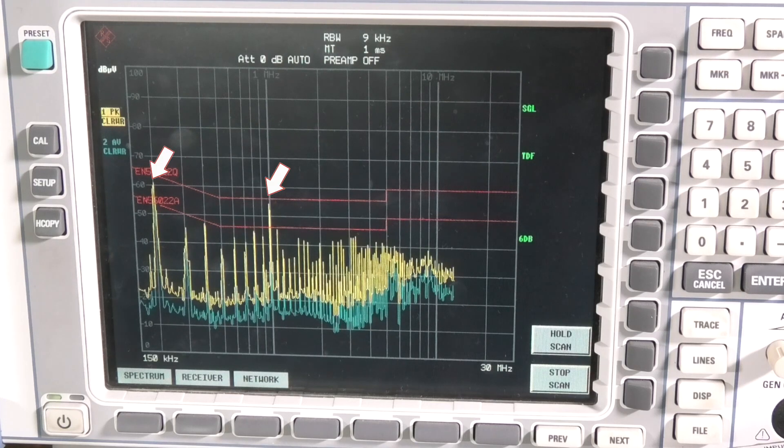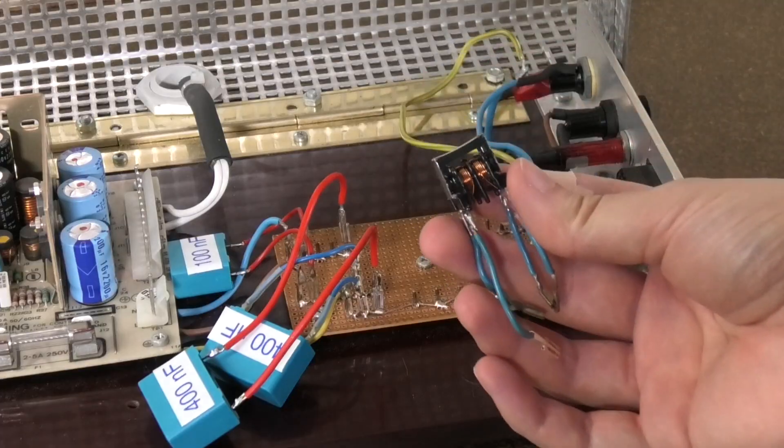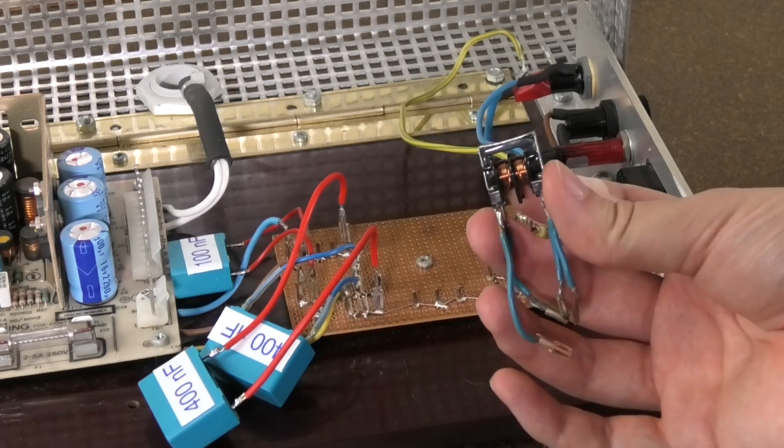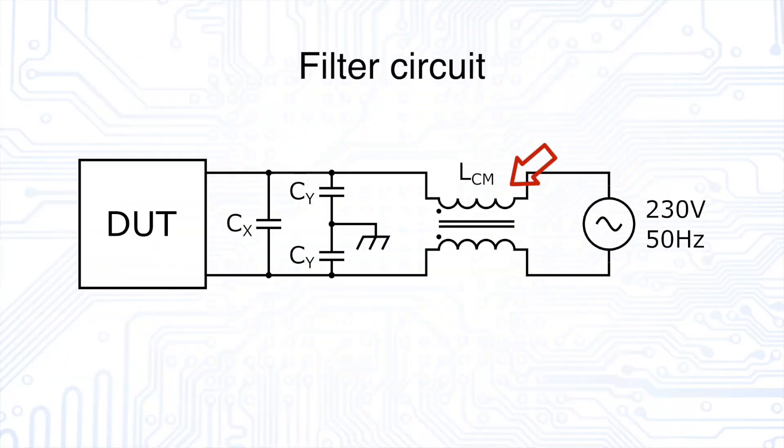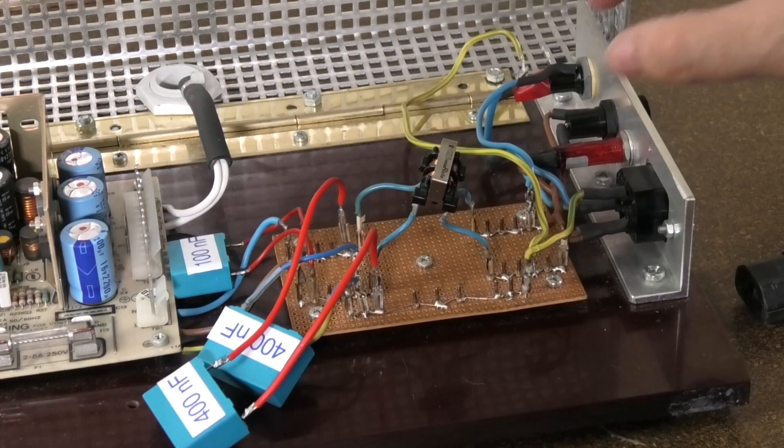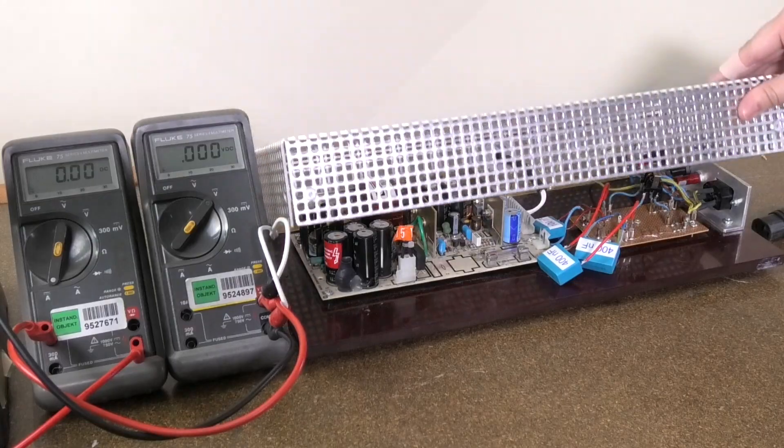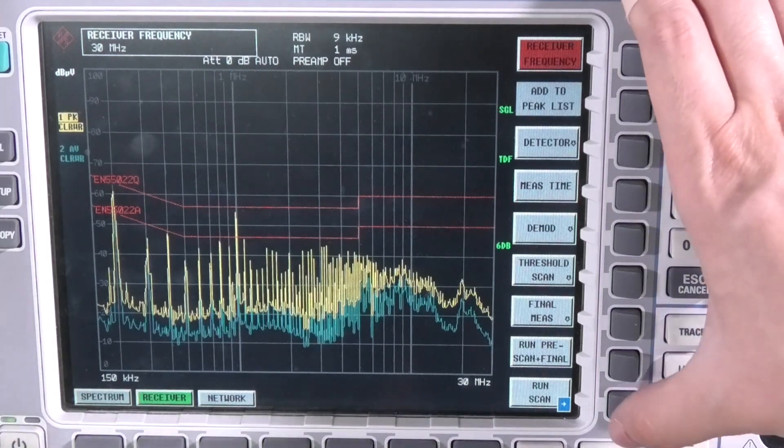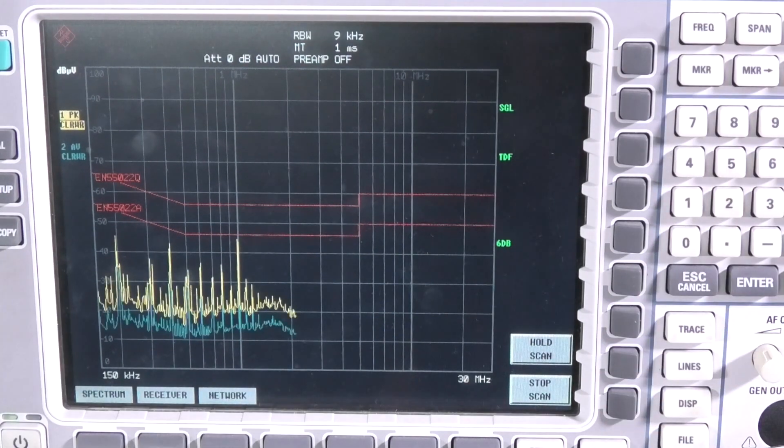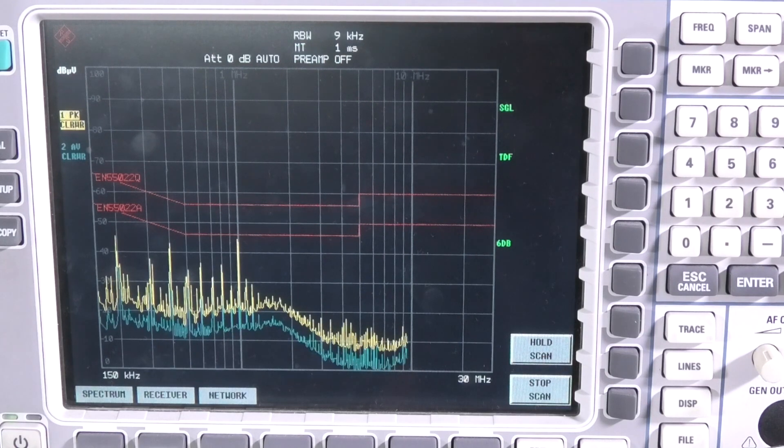However, two peaks still cause me some concern. These are dangerously close to the limit. Therefore, I will modify the circuit one last time. I would like to try a common mode choke. This device has four connections so I must install it the correct way. Let's see if the choke has done something good. Wonderful! This is exactly how preliminary measurements should look. Far away from the limit.